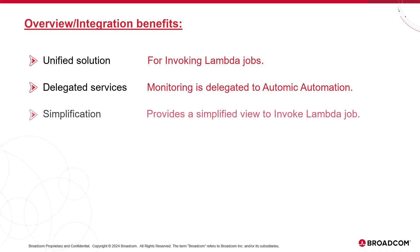Atomic Automation lets us build configurations with intuitive interfaces like drag-and-drop workflows and supervise them in simple dashboard tools designed natively for operations. Statuses are color-coded, and retrieving logs is done with a basic right-click. From an operations perspective, Atomic Automation highly simplifies the configuration and orchestration of Invoke Lambda jobs.